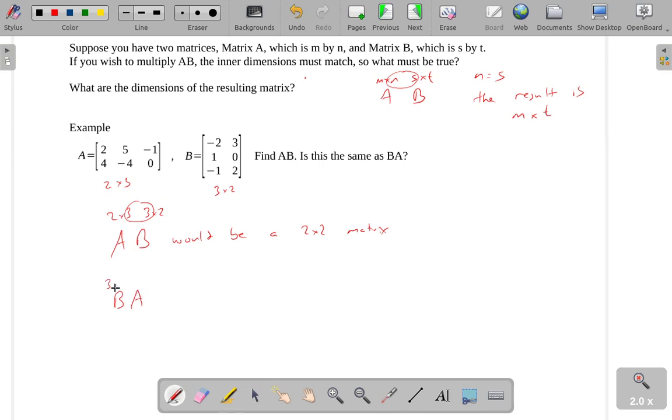If we were to swap the direction of this multiplication, you can see the inner dimensions still match. But B times A would be a 3 by 3 matrix.